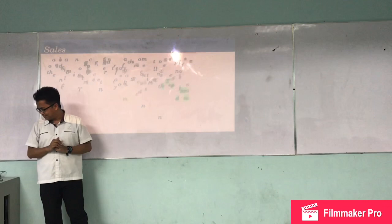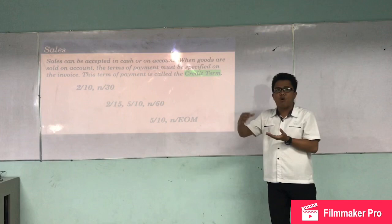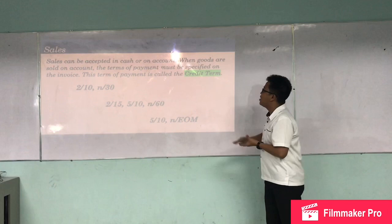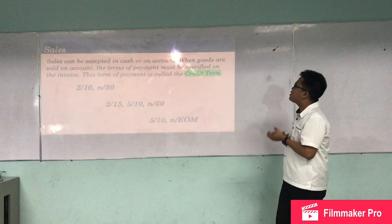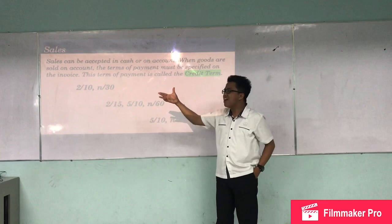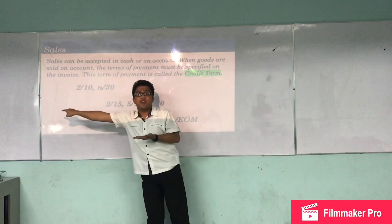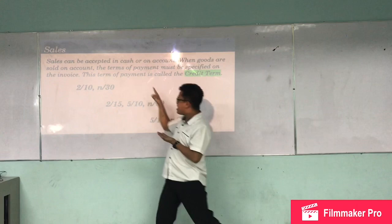Sales can be accepted in cash or on account. When goods are sold on account, the terms of payment must be specified on the invoice — these are called credit terms. For example, with terms of 2/10, n/30, if you pay within 10 days you get a 2 percent discount, but the full amount is due within 30 days.